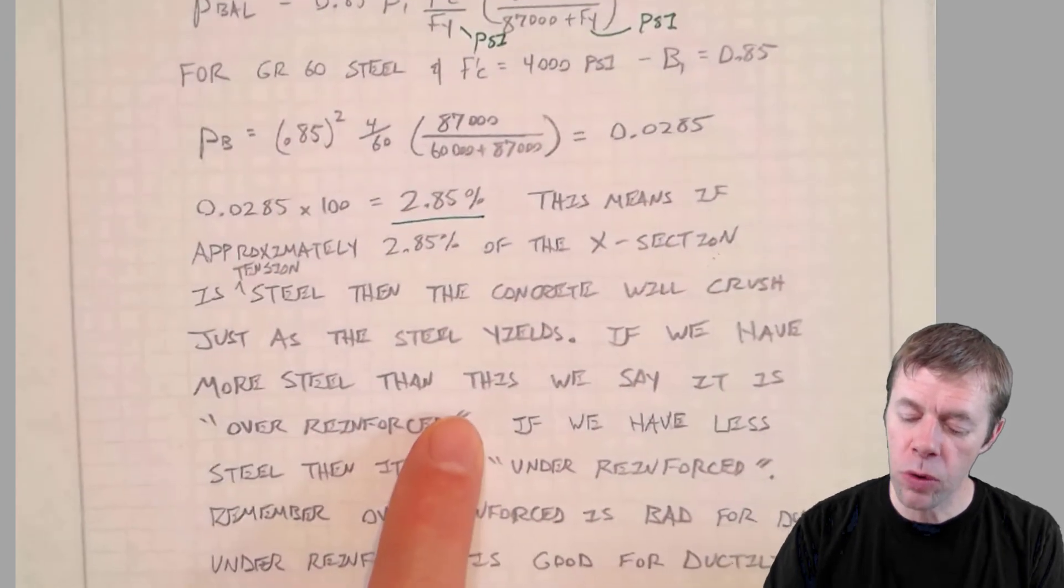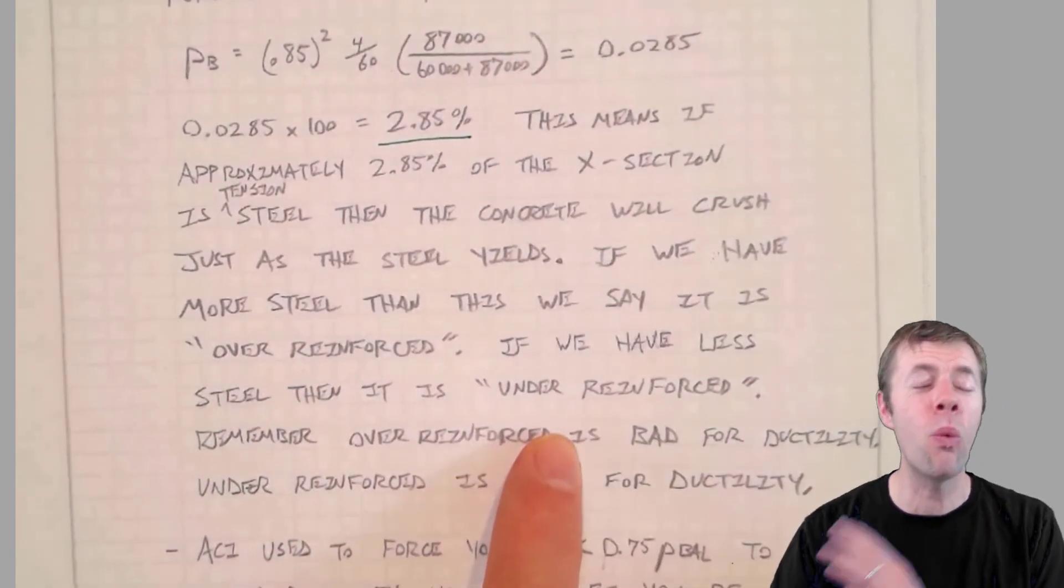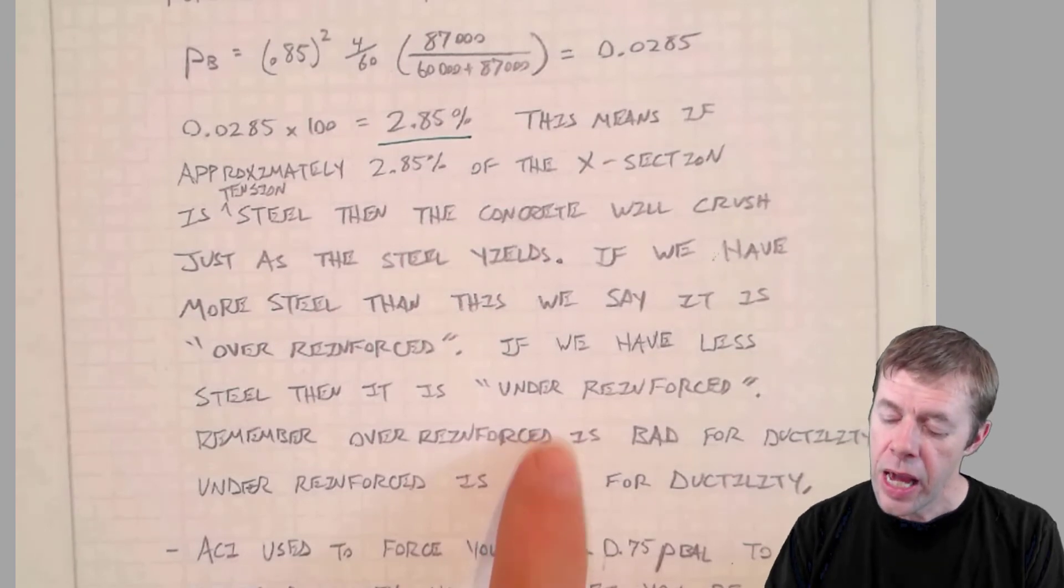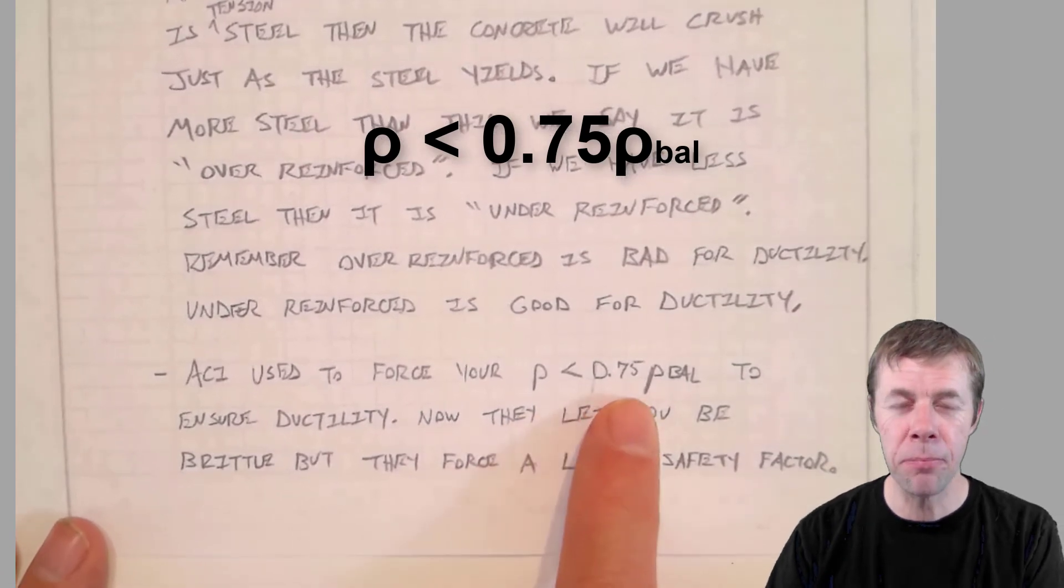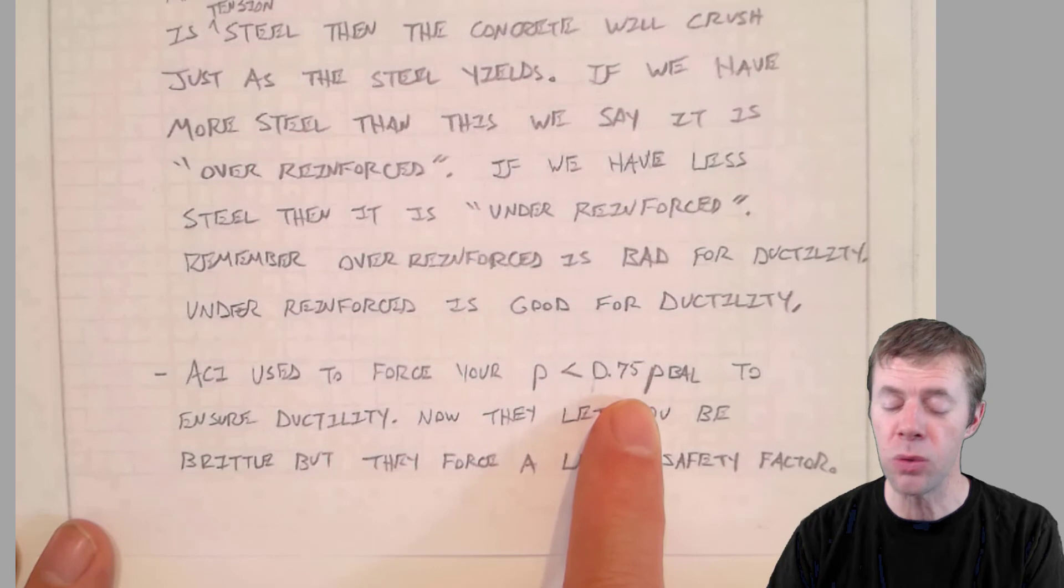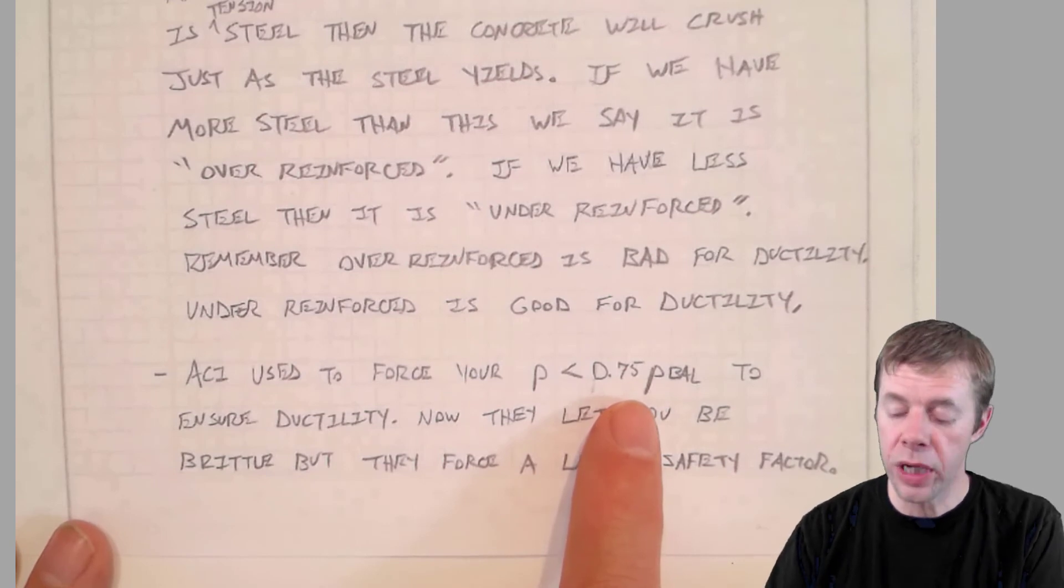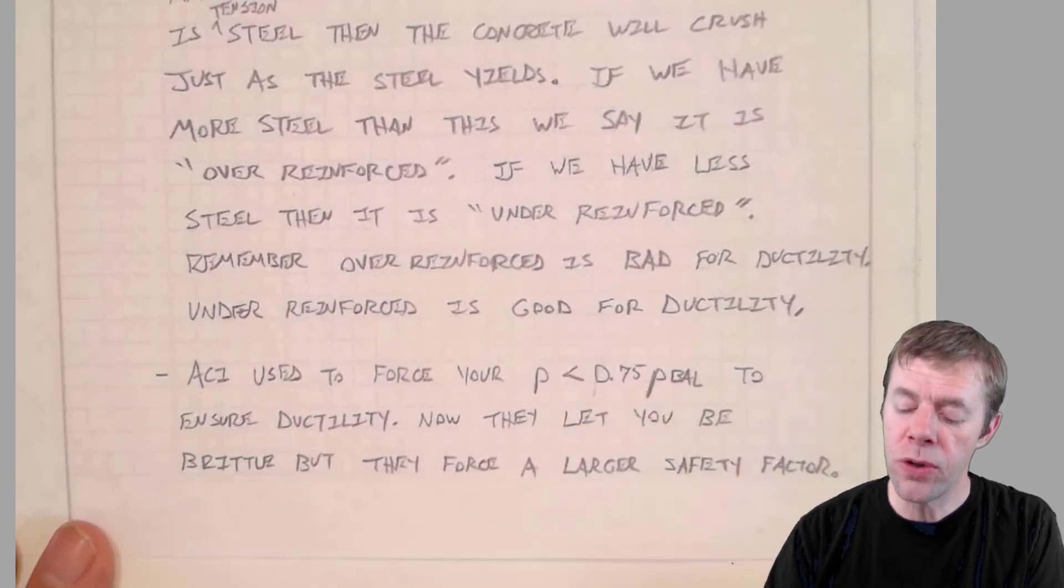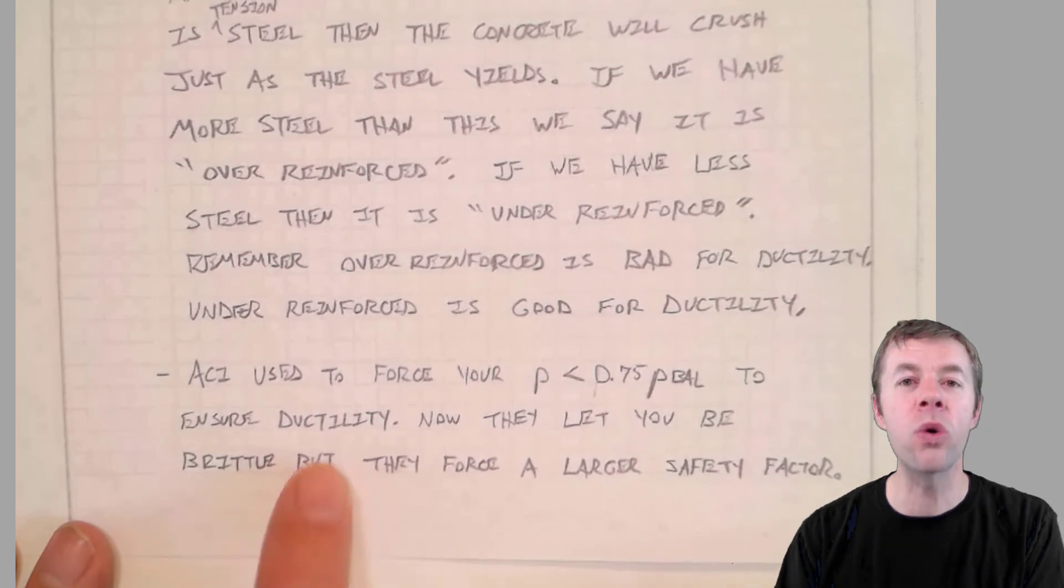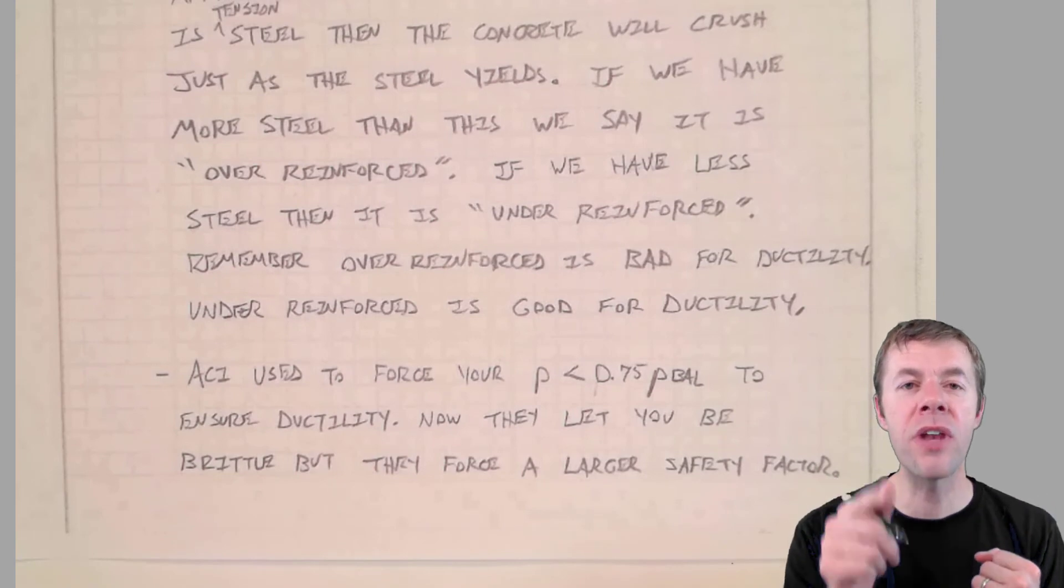If we have more steel than this, then we'll say it's over-reinforced. If we have less steel, we say it's under-reinforced, but we don't even want to be close. We want to be way under-reinforced. It used to be that ACI used to force our rho to be less than 0.75 times rho balance. And you will see all kinds of people that will use this for design. I don't believe in it. I don't think it's that useful. It's okay. But I think there's a better approach. But we would do this again to ensure we get ductility. But now we're going to use a different way. We're going to control it with our safety factor. On to the next video.